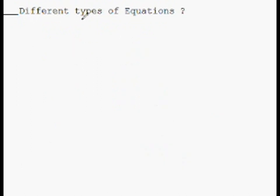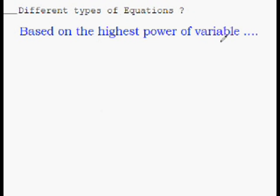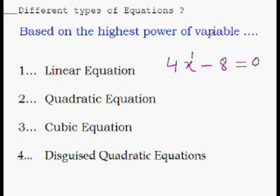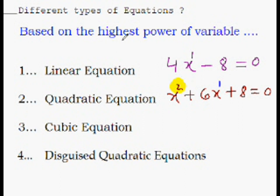What are the different types of equations? Classifying based on the highest power of the variable: a linear equation has the highest power of the variable as 1 — like the equation we just solved. A quadratic equation has the highest power of the variable as 2. For example, even though there may be another x with power 1, we are concerned only with the highest power.